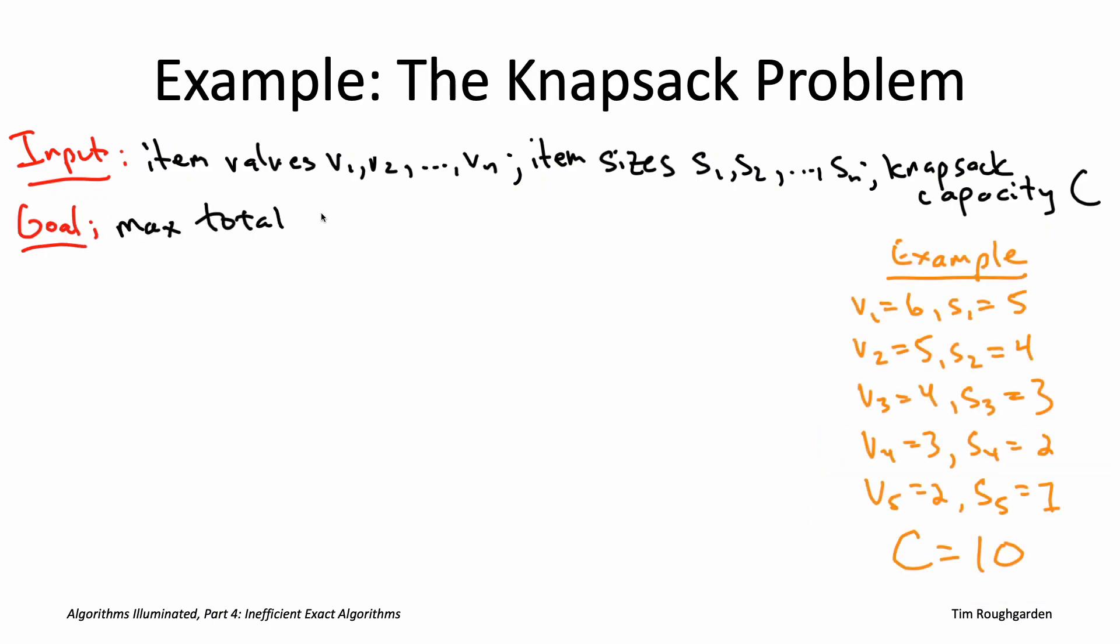The goal is to choose a subset of the items with the total value as high as possible, but the constraint is that the sum of the sizes should be at most the knapsack capacity. The problem specification spells out three things.